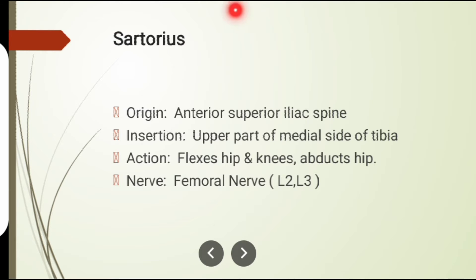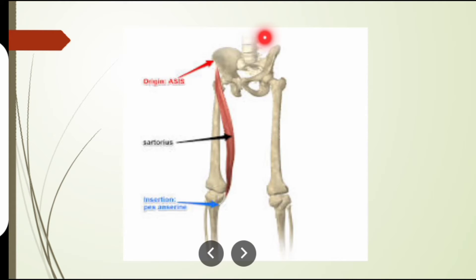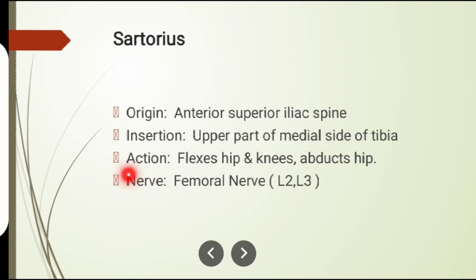Sartorius muscle is also a flexor of the knee joint. Its origin is from the anterior superior iliac spine and its insertion is on the upper part of the medial surface of the tibia. Actions: hip flexion, knee flexion, and hip abduction. Nerve supply: femoral nerve.